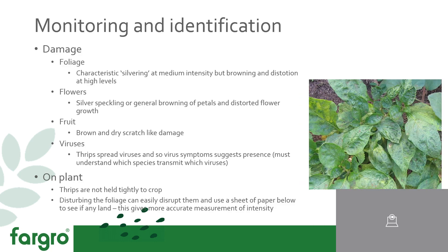If you've done all of the above but still have thrips in your crop, it's very important to monitor their population and identify which species they are. Key things to look out for include damage — foliar silvering as shown in the second slide at medium pest intensity, and then browning and distortion of leaves, flowers and fruit at higher levels of pest intensity. With flowers, you can see silver speckling or browning. Also keep an eye out for viruses — the specific group known as TOSPO viruses that are spread exclusively by thrips.